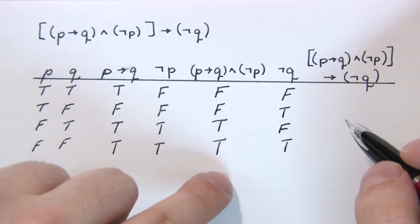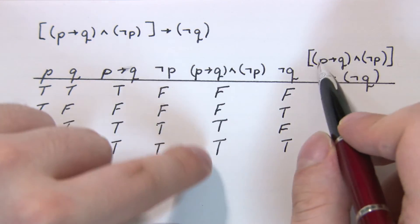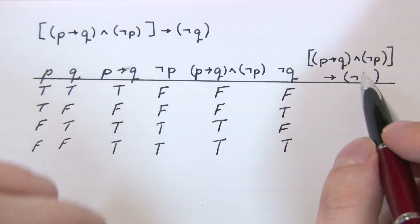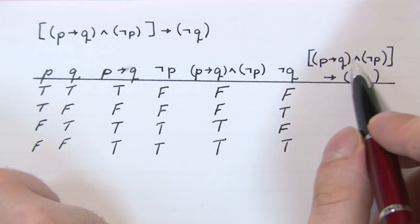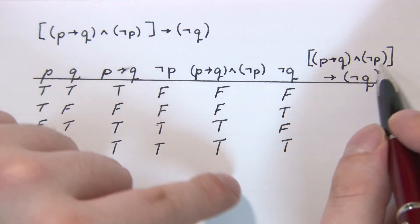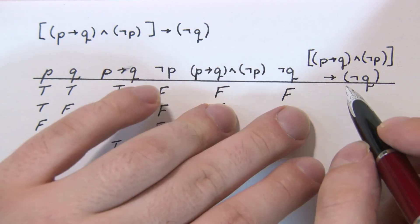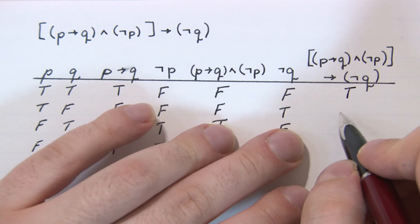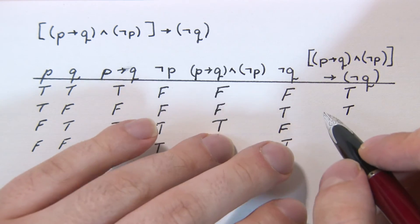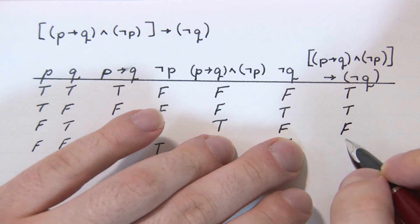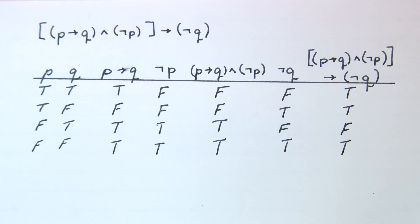And we're almost done. What we need to do now is take the implication of this, so it's this implies this. The implication is only returning a false value when this is true and this is false. So false implies false - that's true. False implies true - that's true. True implies false - that's the only time when we return a false value. And true implies true - that's true. And we're finished with the table.